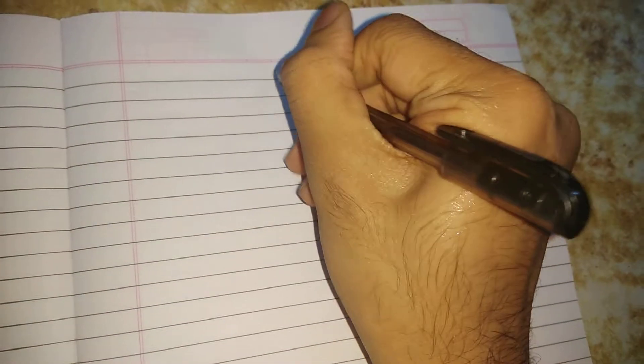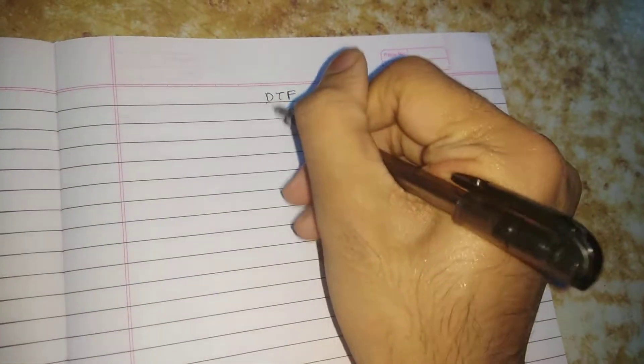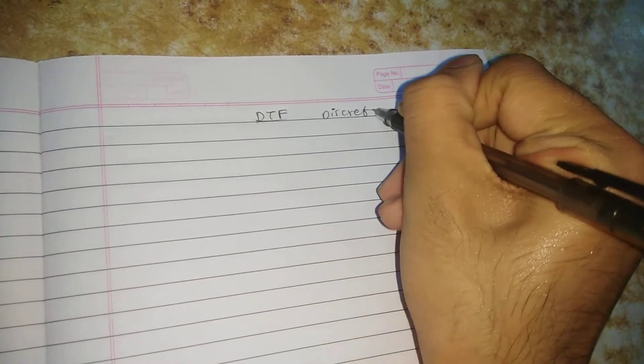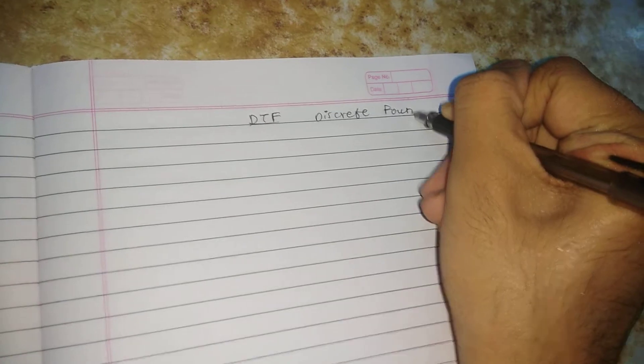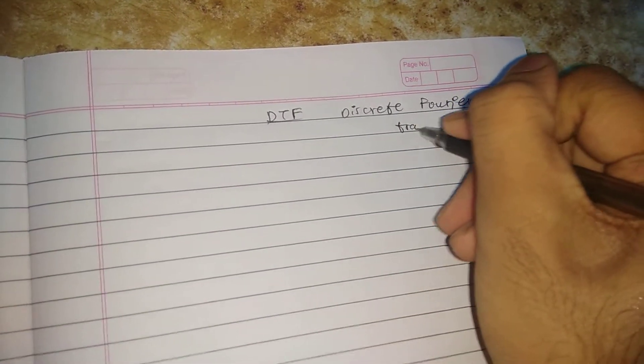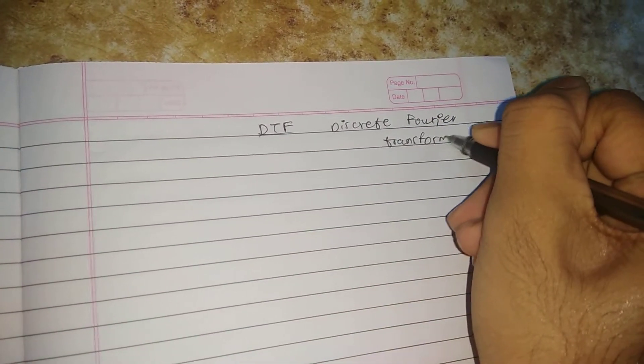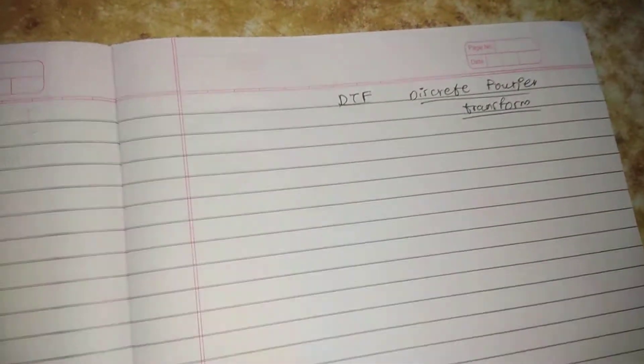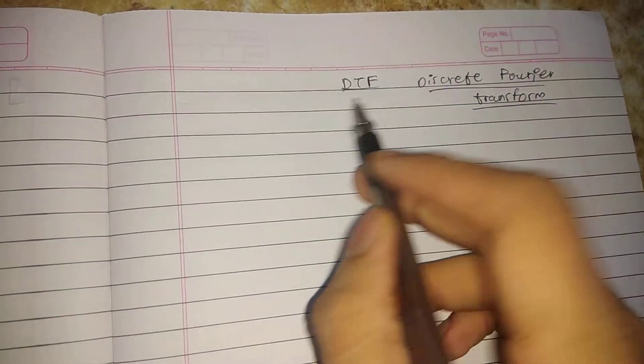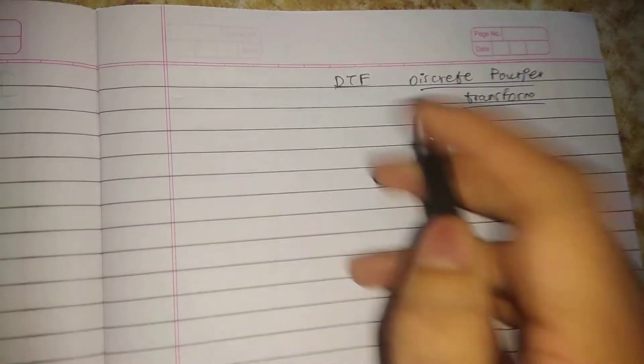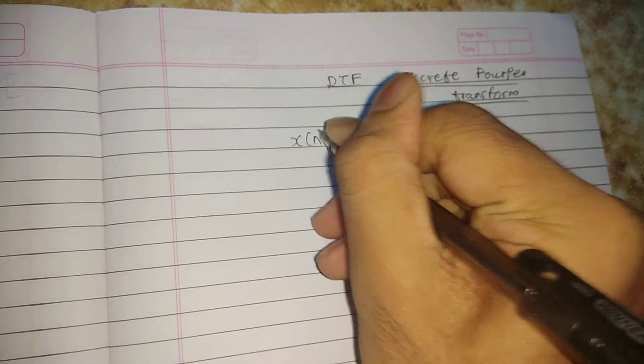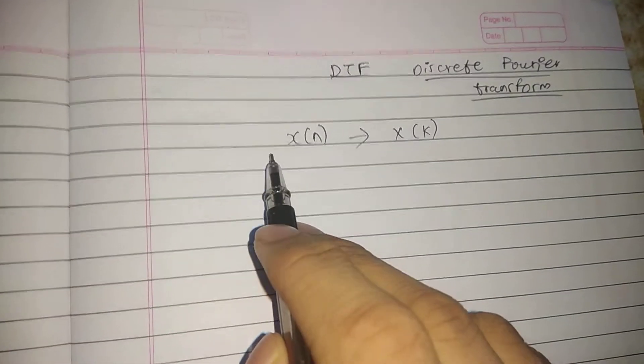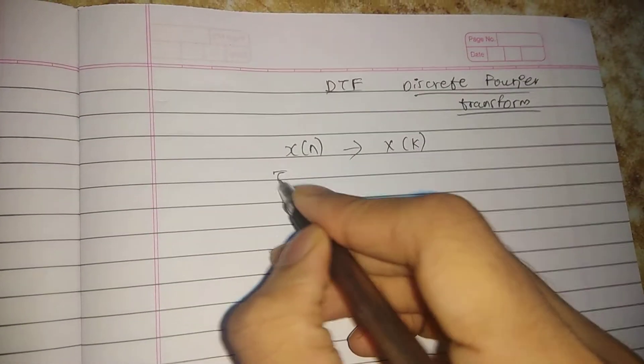In this video we are going to study the Discrete Fourier Transform, that is DFT. What is the meaning of DFT? Suppose you have your signal in time domain. It converts your signal from time domain to frequency domain, so x(n)